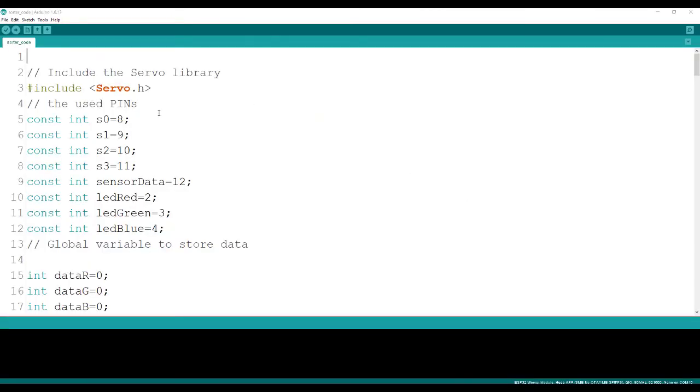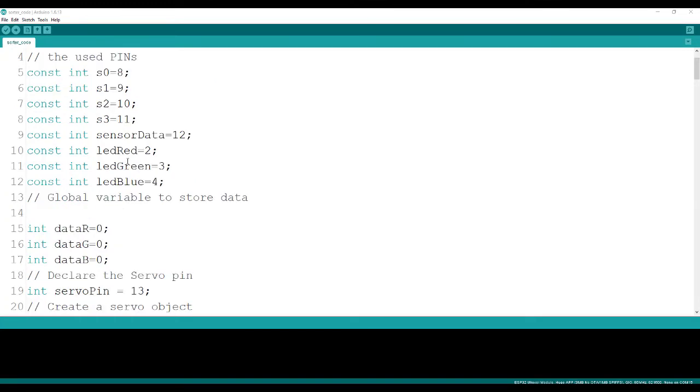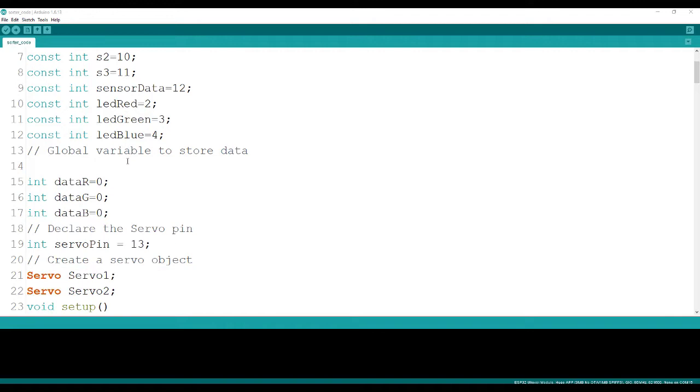So here is the code. 8, 9, 10, 11 is connected to S0, S1, S2, S3 respectively on the TCS sensor.